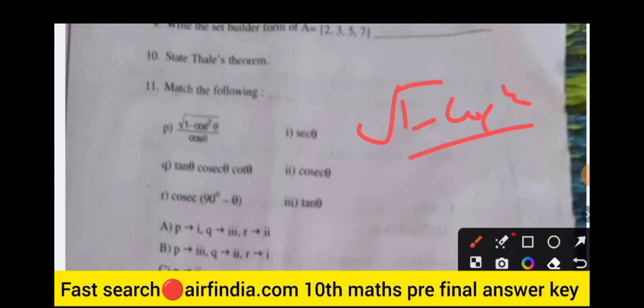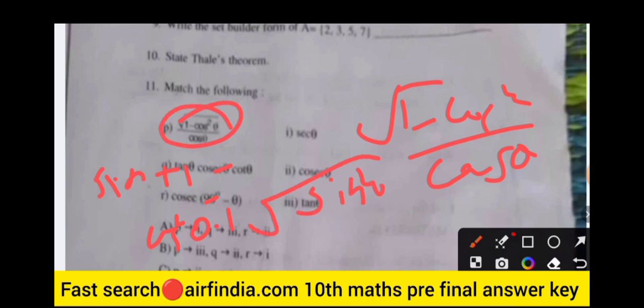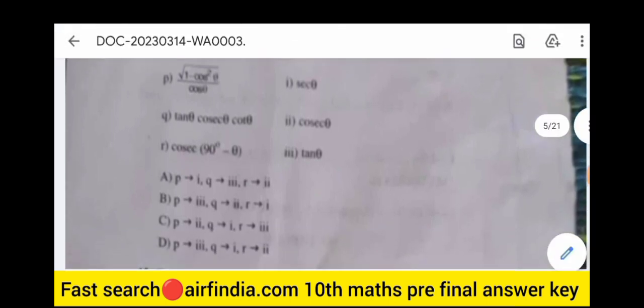In the match-the-following: simplify √(1 − cos²θ) / cosθ. Since sin²θ + cos²θ = 1, we get 1 − cos²θ = sin²θ, so √(sin²θ) = sinθ. Therefore sinθ / cosθ = tanθ. The first answer is tanθ. The next expression is tanθ × cosθ × cotθ, which simplifies to cosθ.